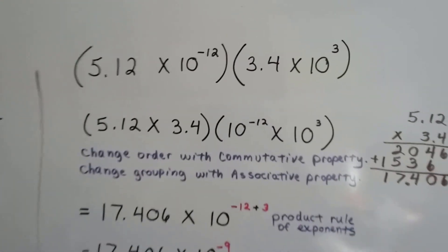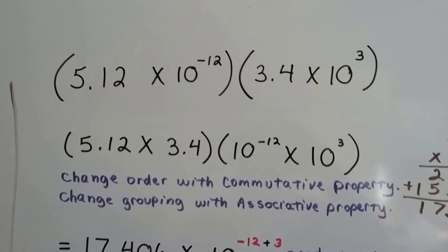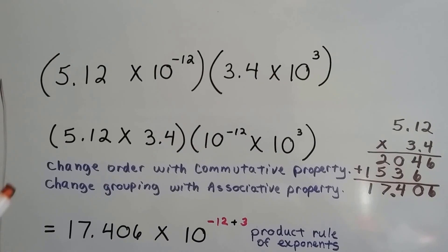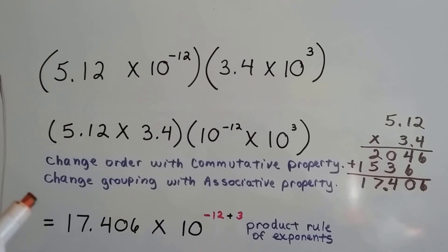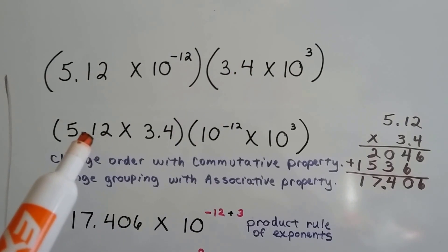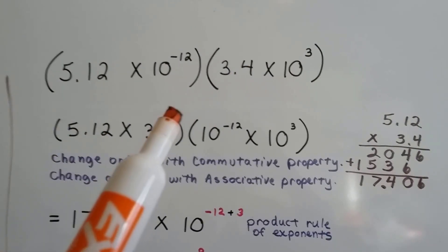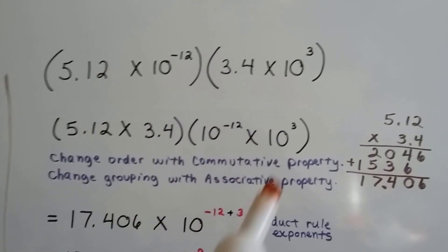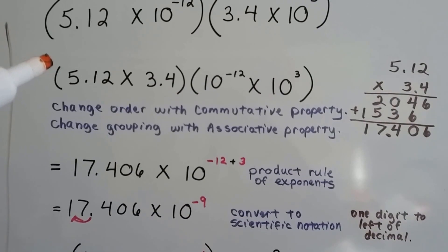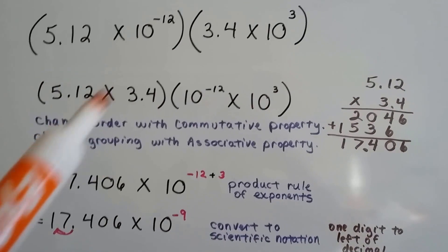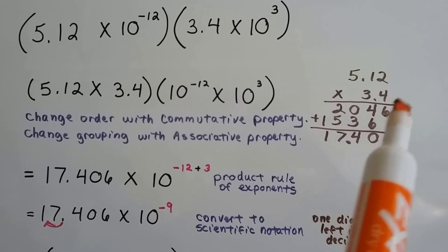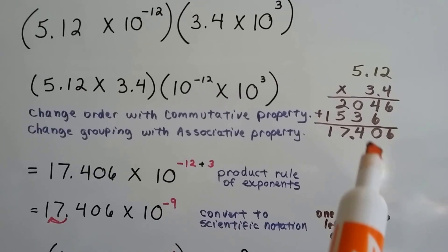Here's another multiplication example. We've got 5.12 times 10 to the negative 12th times 3.4 times 10 to the 3rd. We change the order with the commutative property and change the grouping with the associative property, putting 5.12 and 3.4 up front and the powers of 10 grouped together. We multiply 5.12 by 3.4 and we get 17.408, with 3 decimal hops in the equation so there are 3 hops in the product.